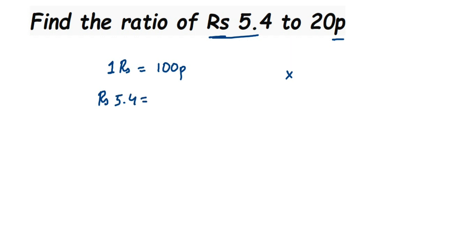Rupees 5.4 will be equal to 5.4 multiplied by 100. I hope you understood why we're multiplying - because we're converting from rupees to paisa, from higher unit to smaller one. When you multiply 5.4 and 100, we'll get 540 paisa.